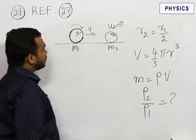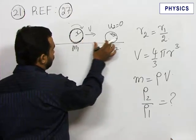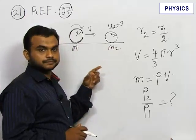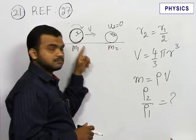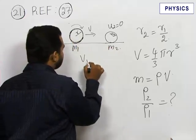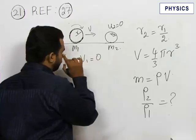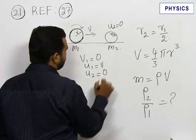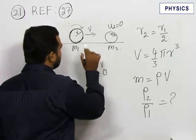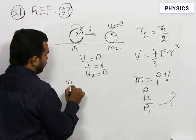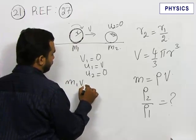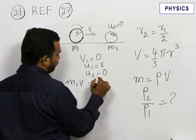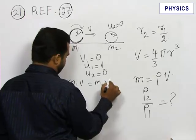By momentum conservation, we can write the total momentum before collision equals total momentum after collision. Here it is given that after collision the first sphere comes to rest. So the final velocity of the first sphere is 0 and the initial velocity is v. Initial velocity of the second sphere is 0. Writing all these in the momentum equation, you will get m1 × v = m2 × v.